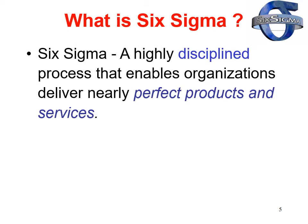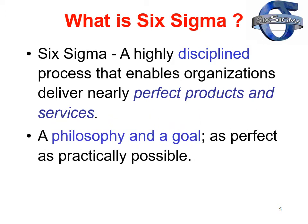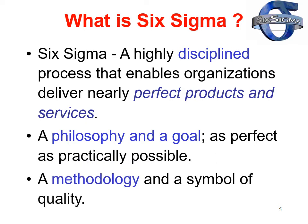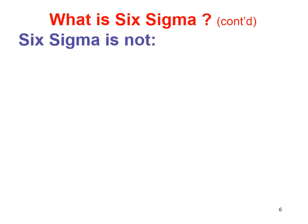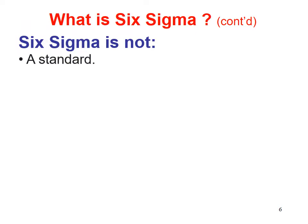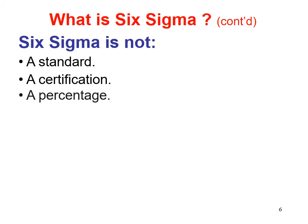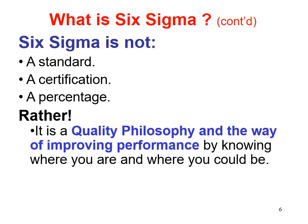What is Six Sigma? Six Sigma is a highly disciplined process that enables organizations to deliver nearly perfect products and services. It is also a philosophy and a goal — as perfect as practically possible. It is also a methodology and a measure of quality. Six Sigma is not a standard, a certification, or a percentage. Rather, it is a quality philosophy and a way of improving performance by knowing where you are and where you could be.